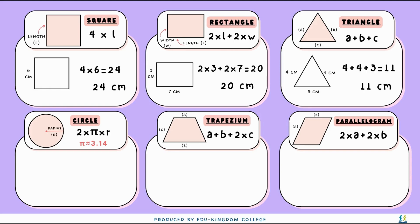For this triangle, it can be known as an isosceles, where the two longer sides are the same length. So we have 4 plus 4 plus 3, which gives us 11 centimeters as the perimeter.